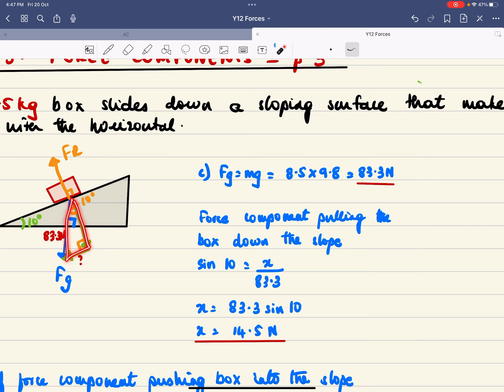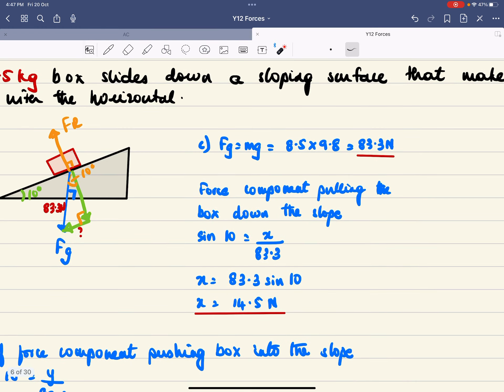So both of them make an angle of 90 degrees. So in order to find the size of this component, I look at that triangle. So this is also 10 degrees. They're similar triangles and this is 90 degrees and I know this is 83.3. So this is opposite. So I'm looking at sine theta or sine 10 is this component divided by 83.3 and so I get x which is 14.5 Newtons.